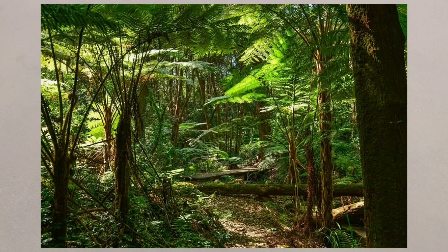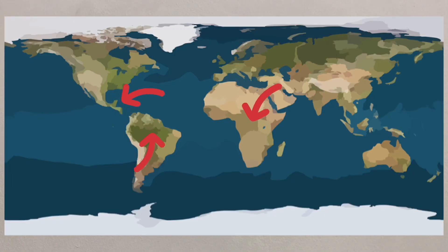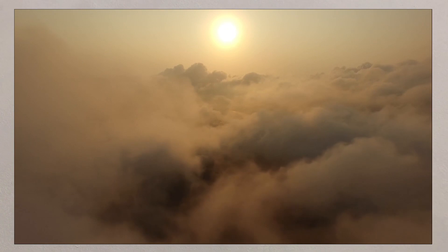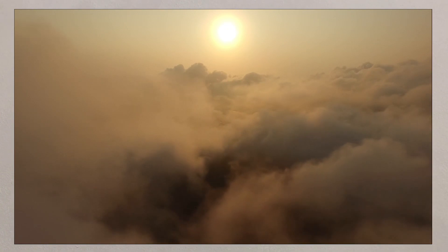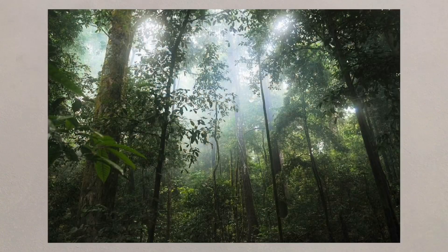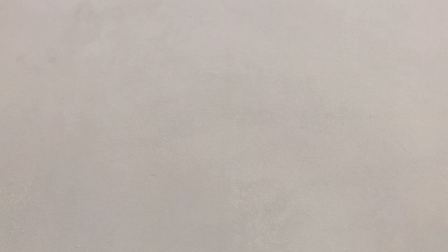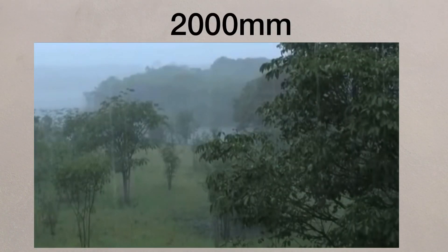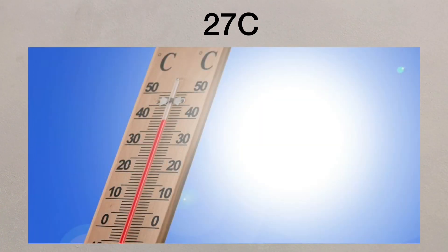Tropical rainforests are found through the tropics of Central and South America, Central Africa, Southeast Asia and Northern Australia. Tropical rainforests are found in warm and wet locations where rainfall can exceed 2,000 millimetres per year and temperatures average about 27 degrees.